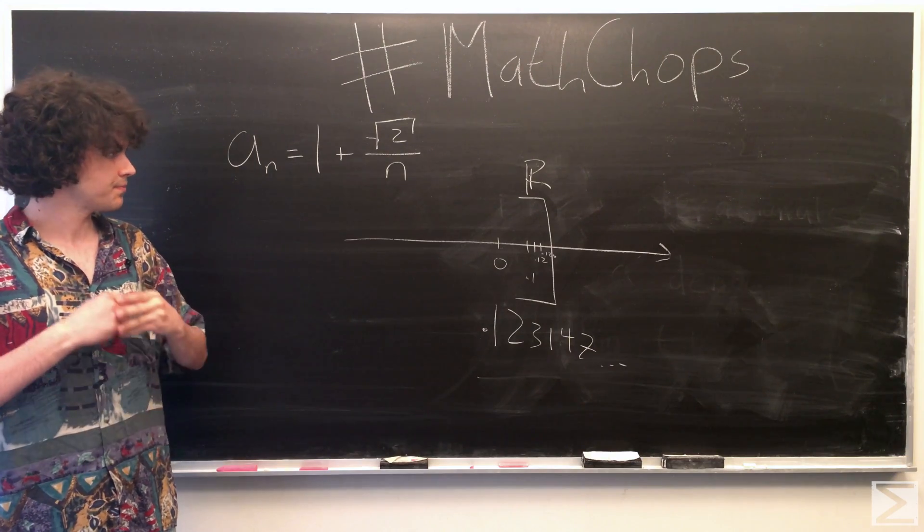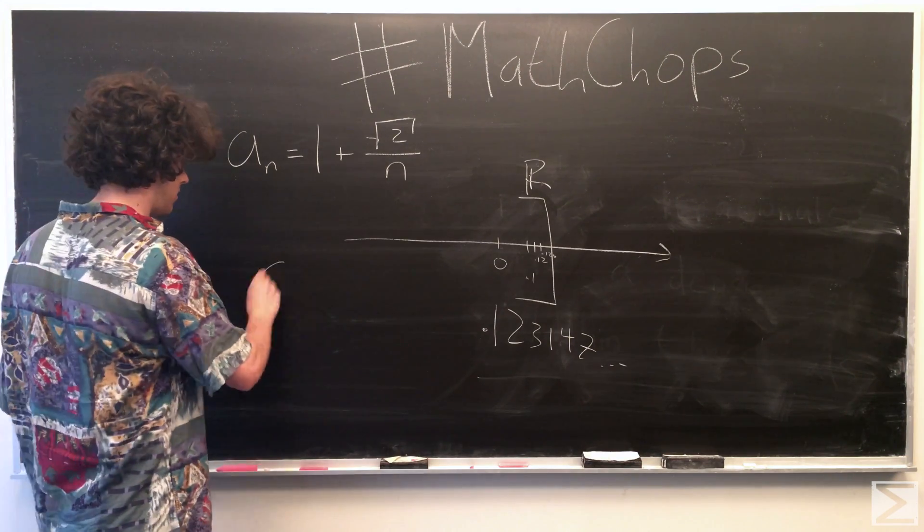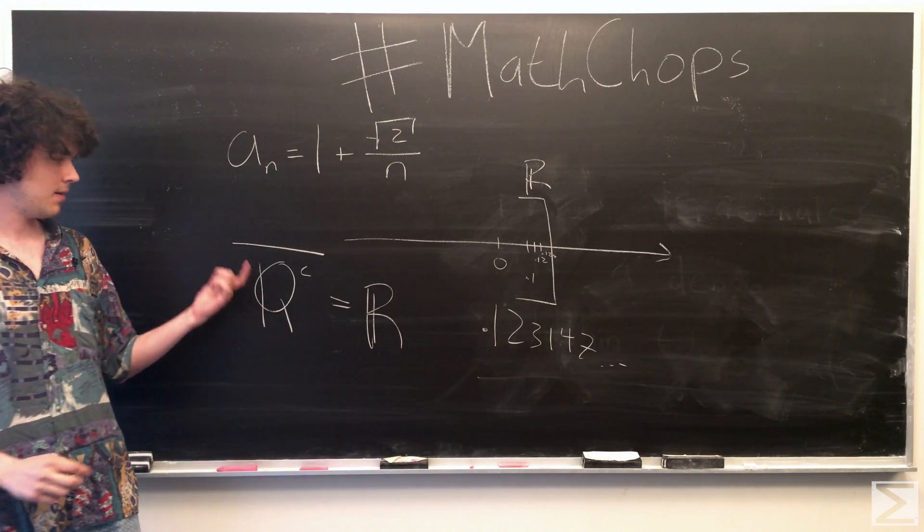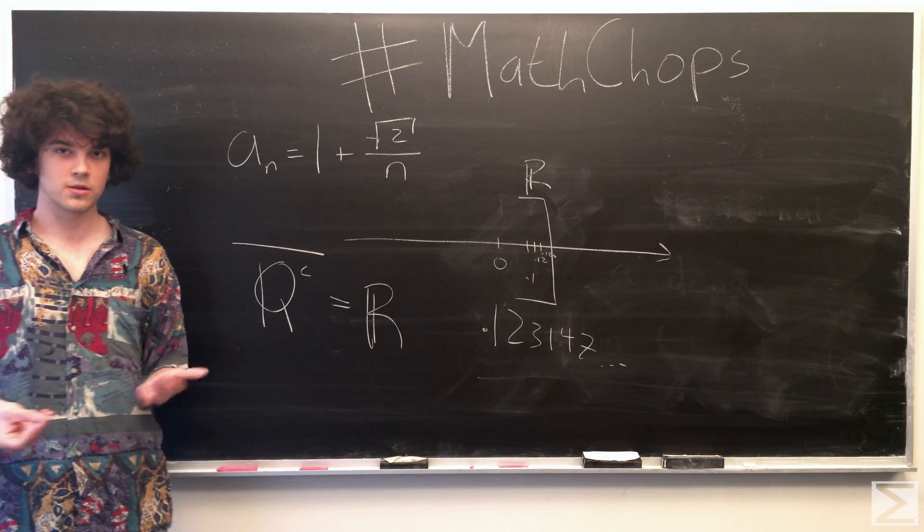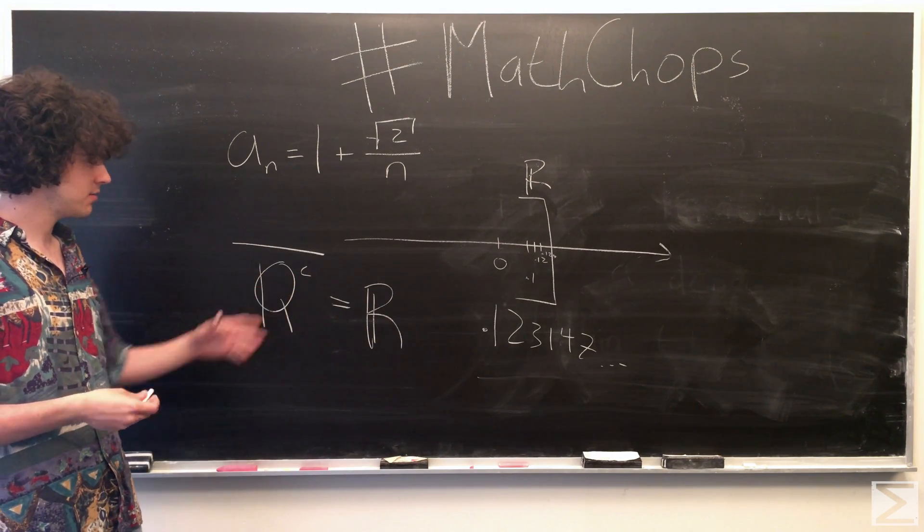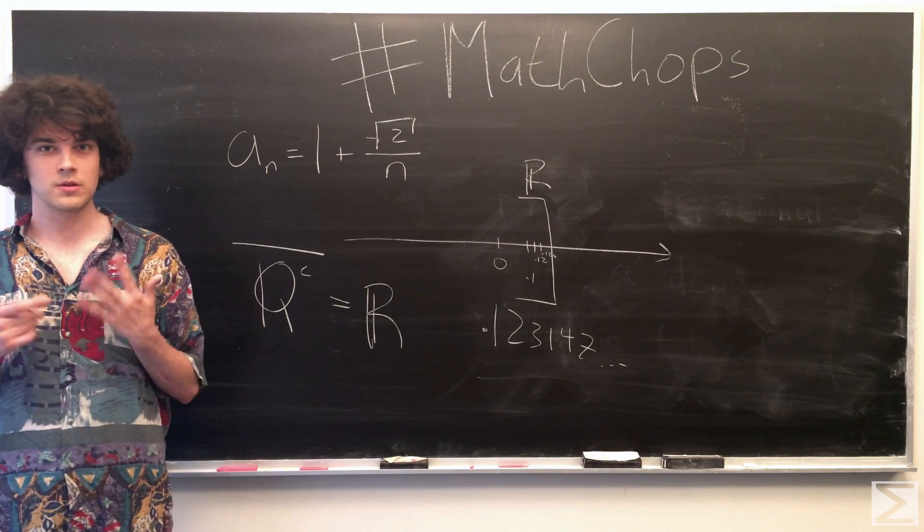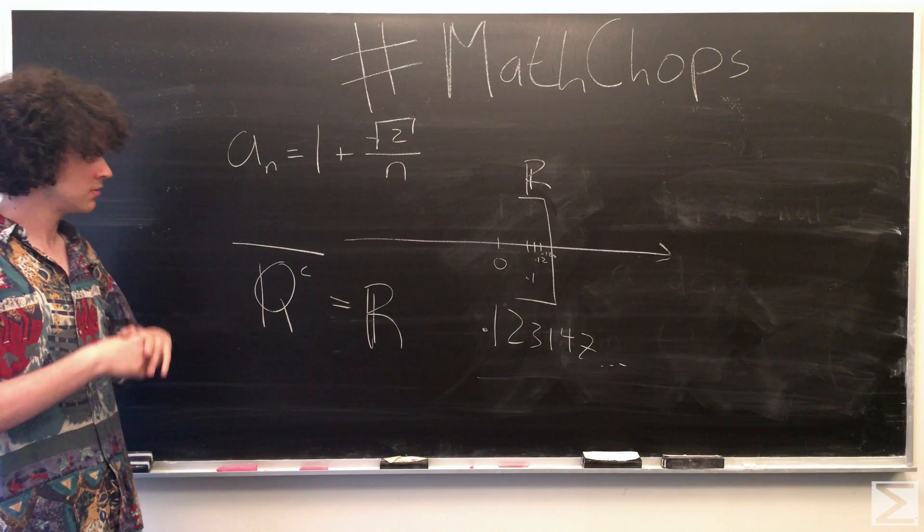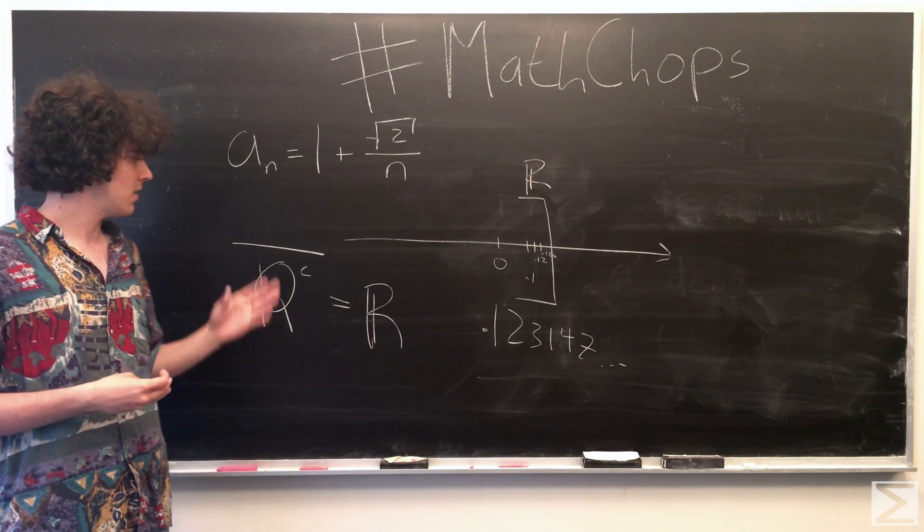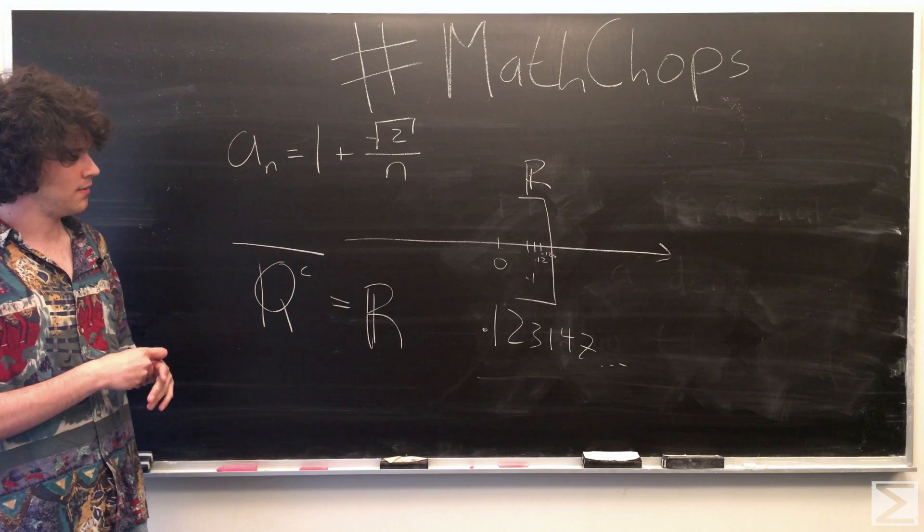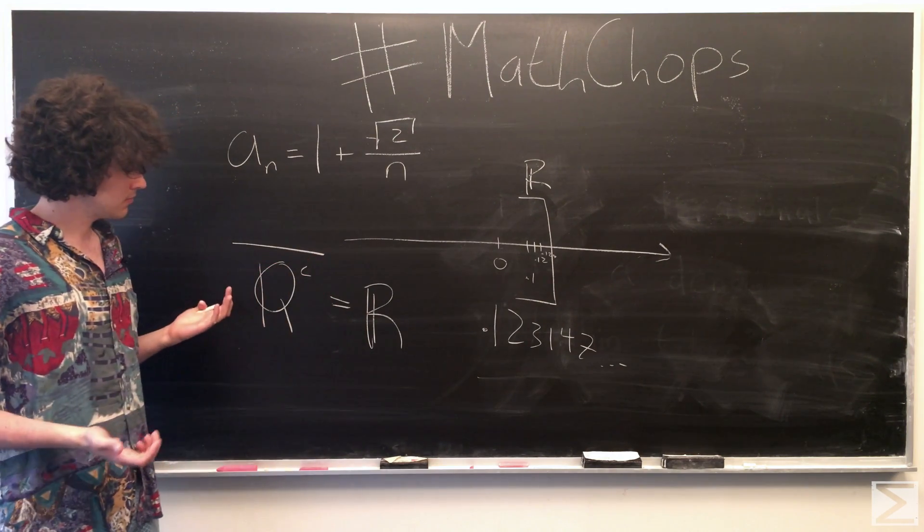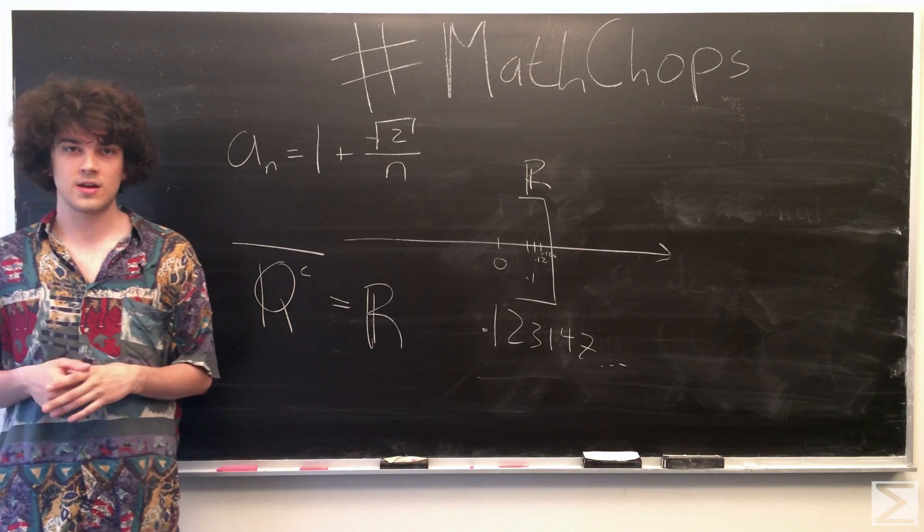So we have this, so this bar means just the closure of the complement of the rational numbers, which is the irrational numbers. So the closure of the irrational numbers is, indeed, the reals, because we have found this sequence. So that's just the definition of a set being dense within another set.